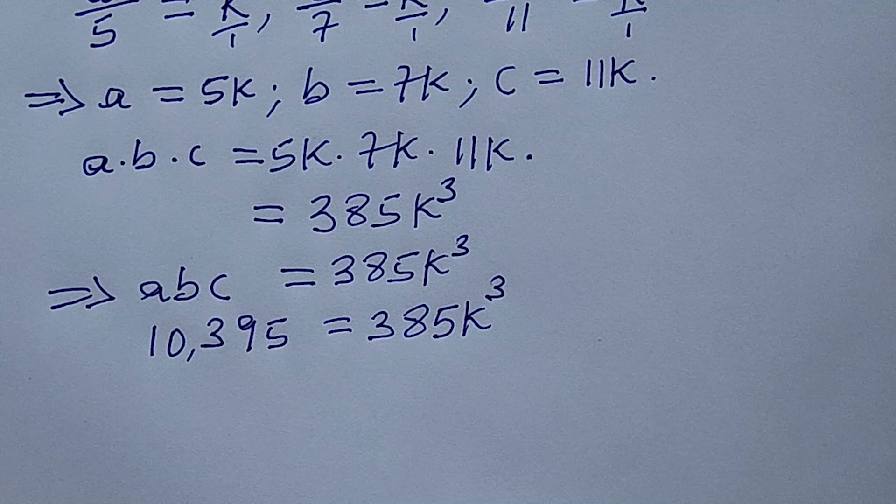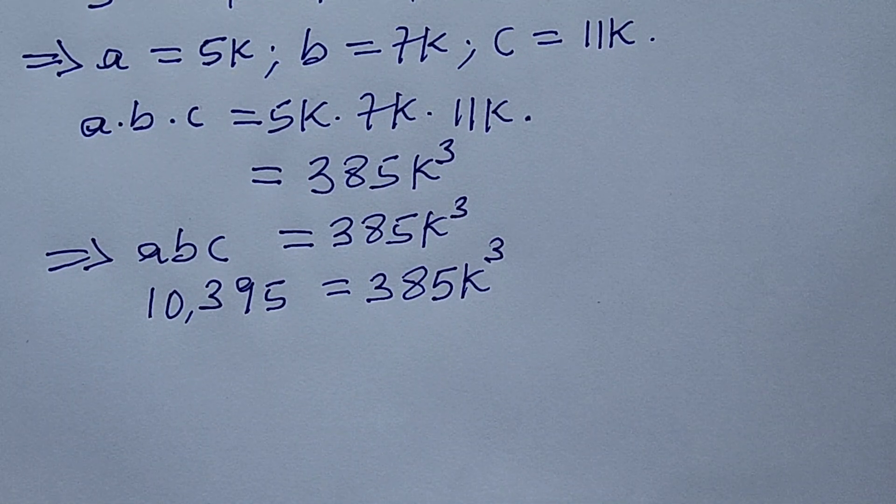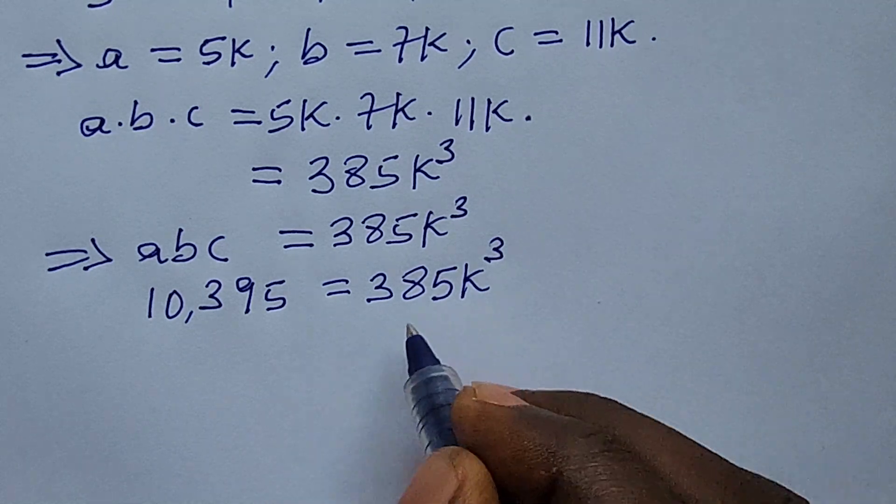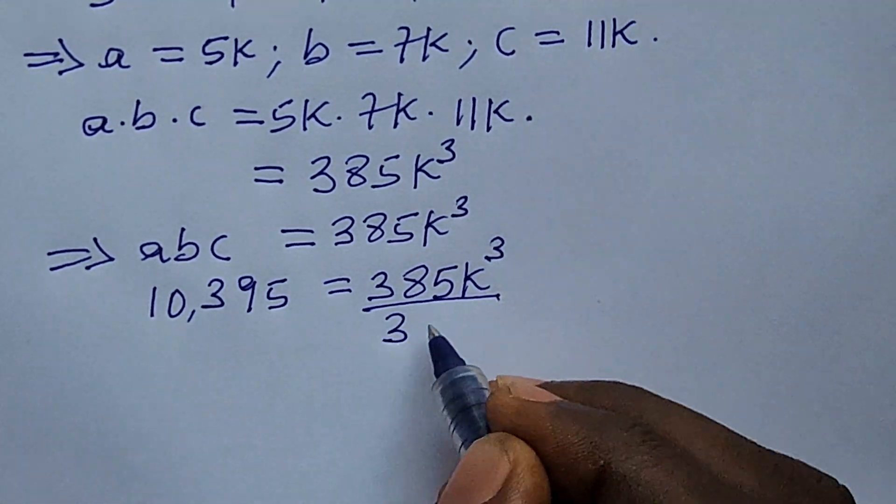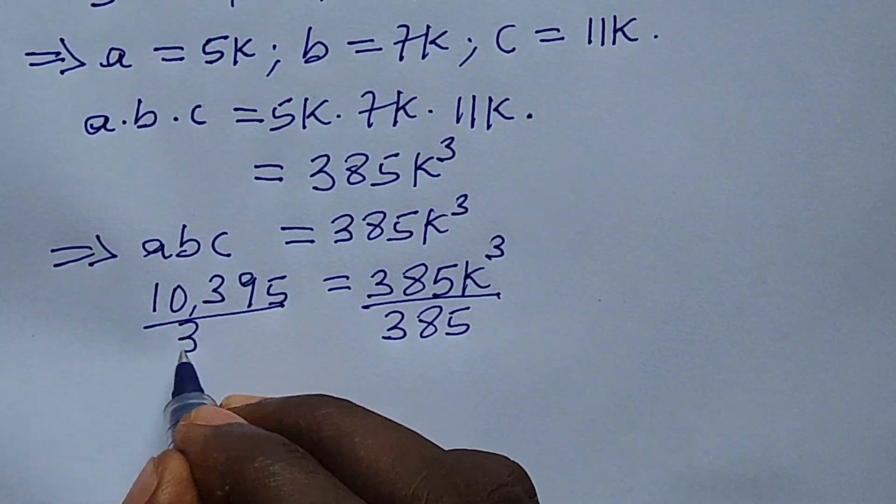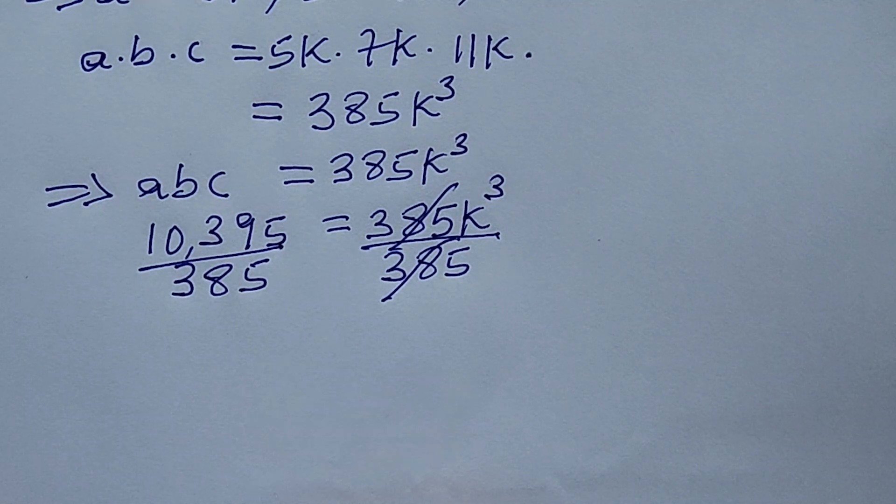Here we want to get the value k. That is what we are trying to fight for here. So with this we divide through by 385. So if we divide through by 385, we must divide this side by 385 also. So this leaves the system.